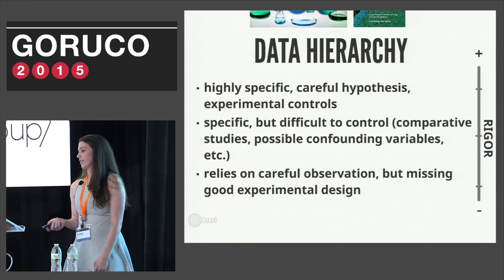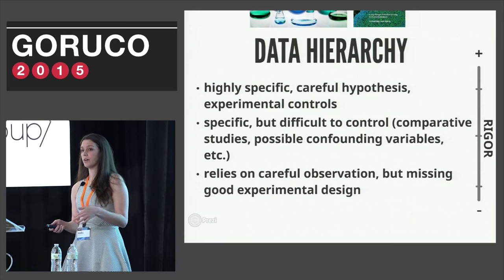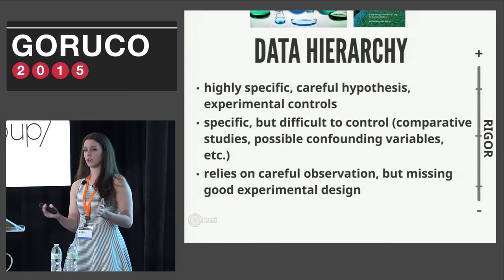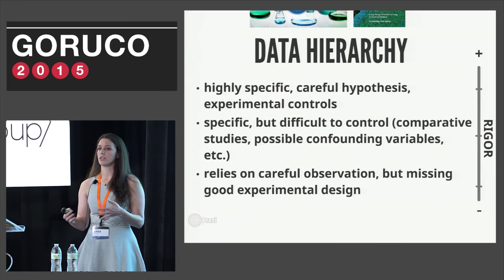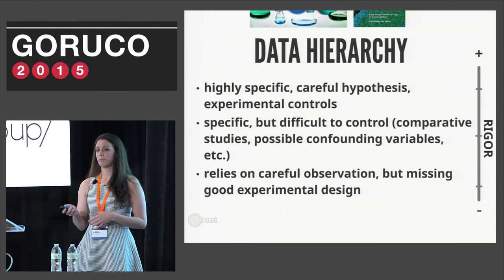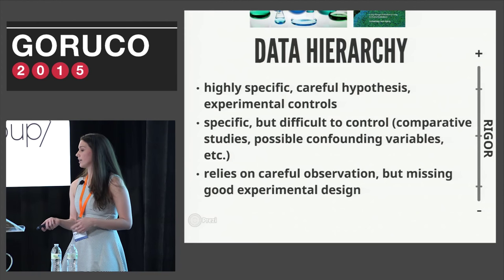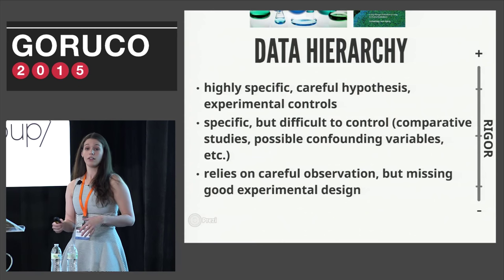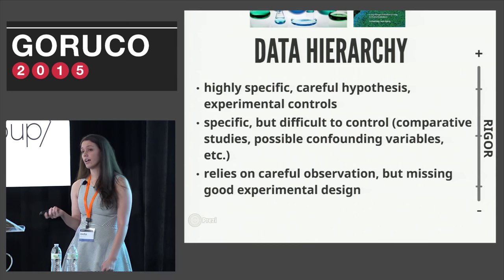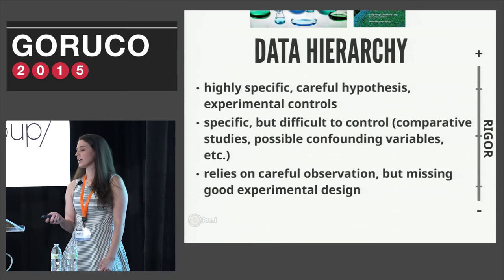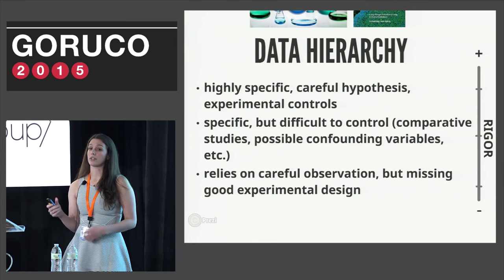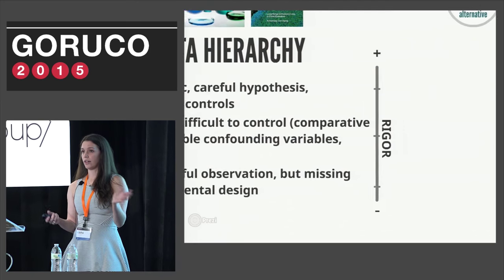I would argue no, and I think I can explain it with this idea of a data hierarchy. It's basically a continuum: at the bottom, data produced from observations — hopefully objective observations — to maybe more specific observations made to address a hypothesis, but that didn't come from a carefully controlled experiment, missing some elements of good experimental design, up to the very top where data went through the entire scientific method process. You can get useful, good quality data at every level of this hierarchy, and it's useful when you acknowledge where it comes from and allow that to inform the way you use it.